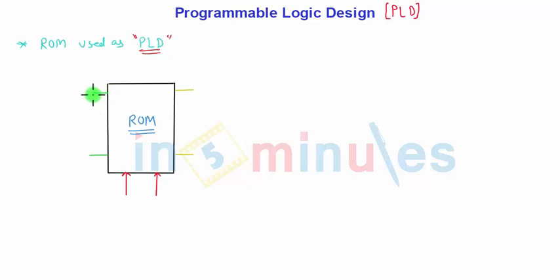We are using ROM as a programmable logic device. We have input lines or address lines—A0, A1, till A of n-1, these are the address lines. And D0 to D of n-1 are the data inputs to ROM. ROM stands for Read Only Memory. This is the section where memory is stored. We have to read it based on the address location.